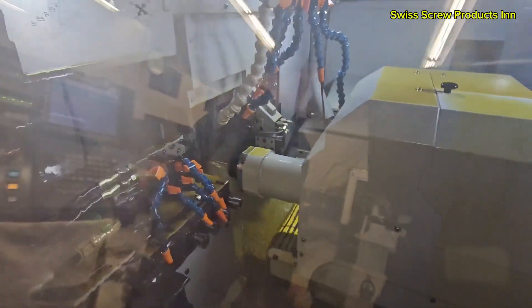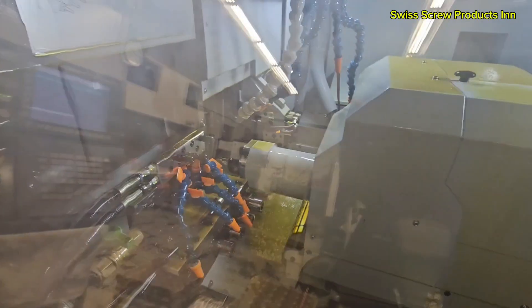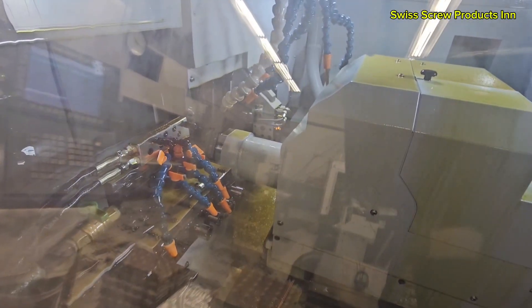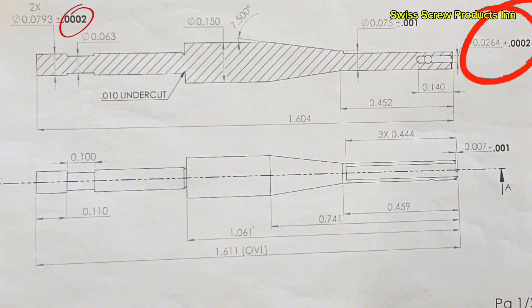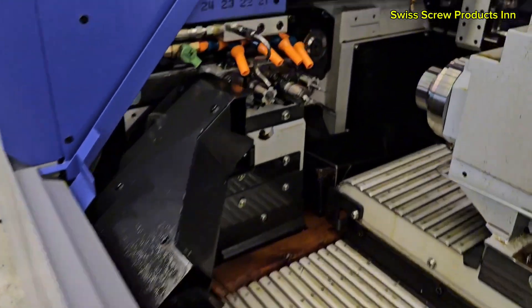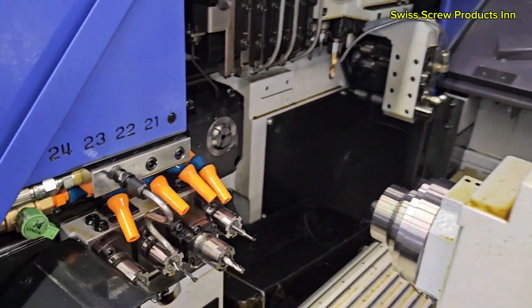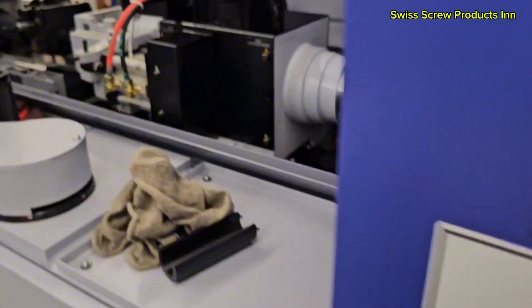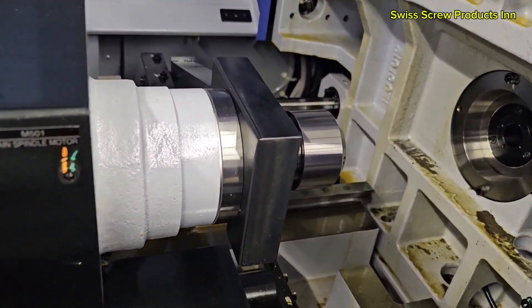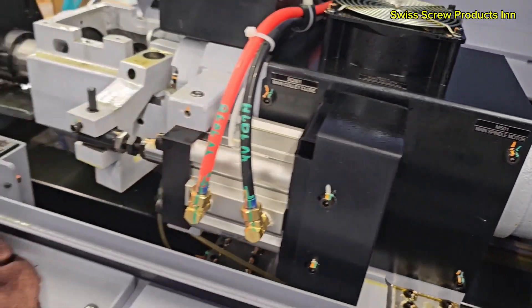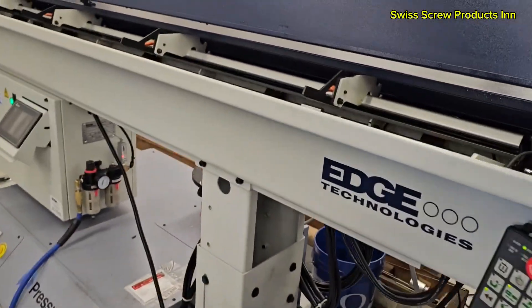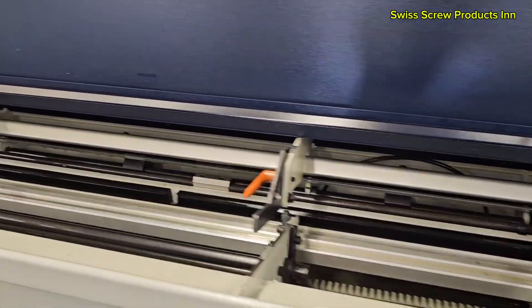Now that we've seen what CNC Swiss screw machines can do, let's talk about why they're the top choice for manufacturers around the world. They offer ultra-high precision, holding tolerances as tight as plus 0.001 inches or 0.0025 millimeter. The guide bushing minimizes vibration, resulting in better surface finishes, especially on long, slender parts. These machines can perform multiple operations—turning, drilling, milling—in one setup.